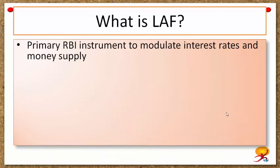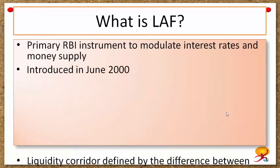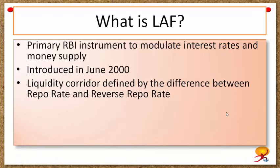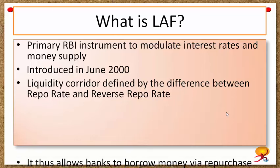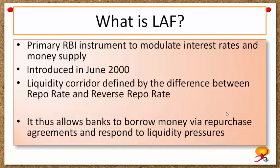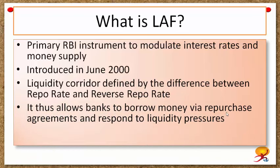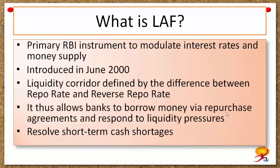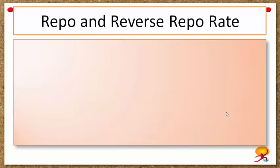LAF or Liquidity Adjustment Facility is the primary instrument of RBI to modulate interest rates and money supply in the economy. It is informally known as a liquidity corridor, which is defined by the difference between the repo rate and the reverse repo rate. It allows banks to borrow money through repurchase agreements and respond to short-term liquidity pressures in the economy.